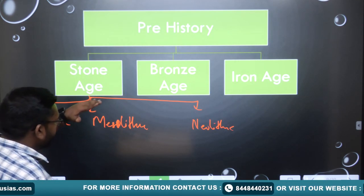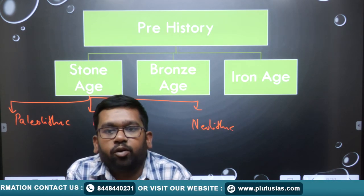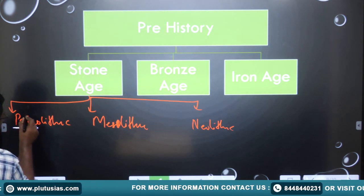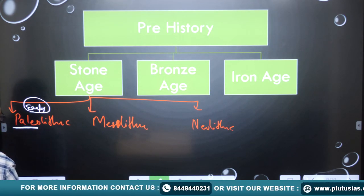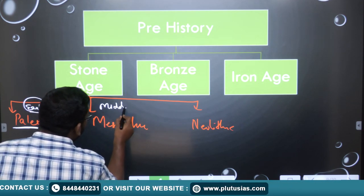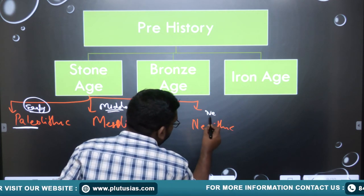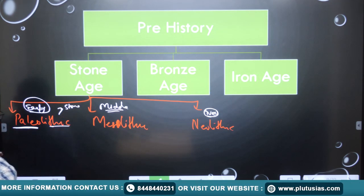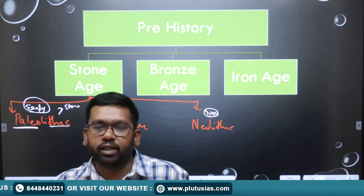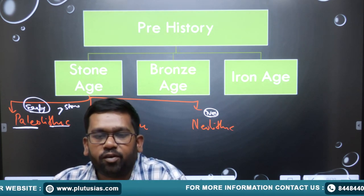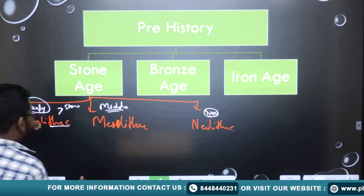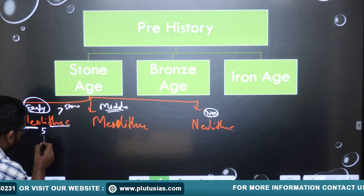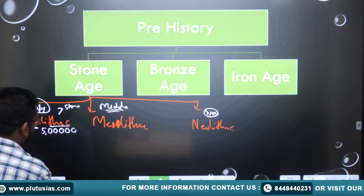The division into Paleolithic, Mesolithic, and Neolithic is based on the type and quality of stone tools used. 'Lithic' means stone. Paleolithic is the early phase of the Stone Age, Mesolithic is the middle phase, and Neolithic is the new or later phase. So these names — Paleo meaning early, Meso meaning middle, Neo meaning new — all relate to different phases of the Stone Age.